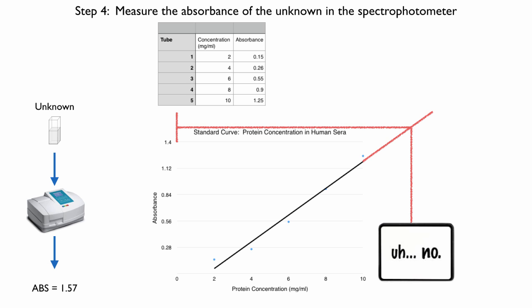That's what I mean when I say that what you are measuring must fall within the range of the units of measure. All you would do in this case is make some more standards—standards of higher concentration so that your unknown does fall on the standard curve. That's the solution to that problem. The solution is not extrapolating that line.